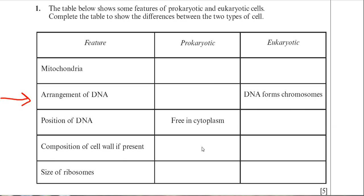The position of the DNA: in a prokaryote it's free in the cytoplasm, whereas in the eukaryote it would be found in the nucleus.